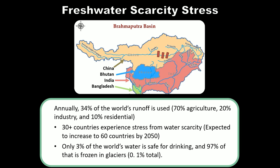We tend to use fresh water for agricultural purposes — crop irrigation needs fresh water. For human societies: drinking, bathing, watering lawns, golf courses, water parks. Any kind of product, whether you're making Coca-Cola or bottling water, uses fresh water. That is a much smaller piece of the total water supply. Annually, 34% of the world's runoff is used: 70% goes to agriculture, 20% to industry, and 10% to residential.